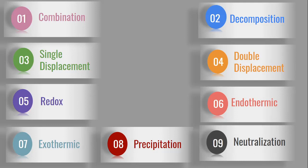So here are the nine types of chemical reactions. We will learn all these types individually, one by one, step by step, from our next video. Thank you.